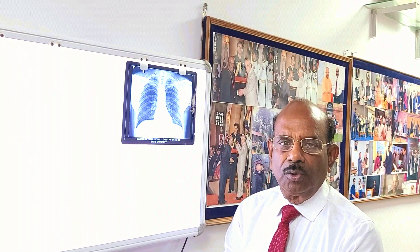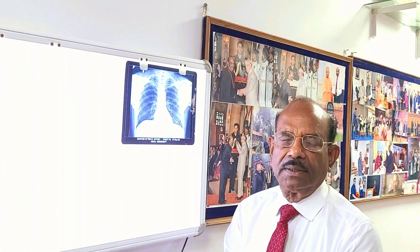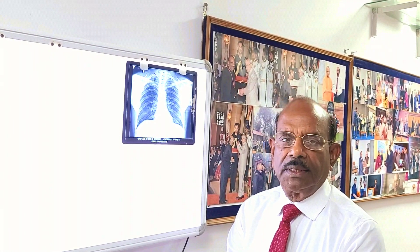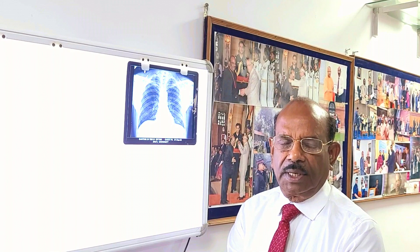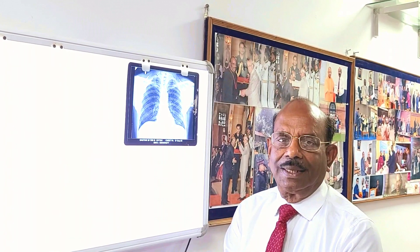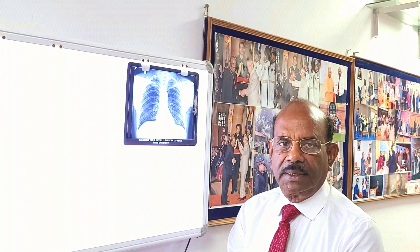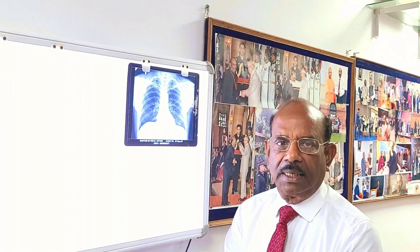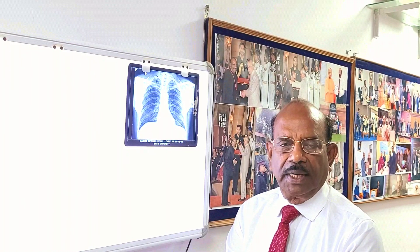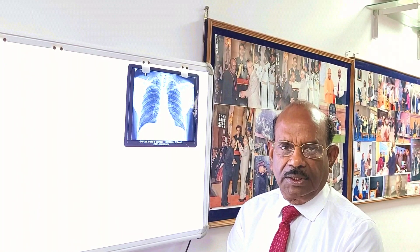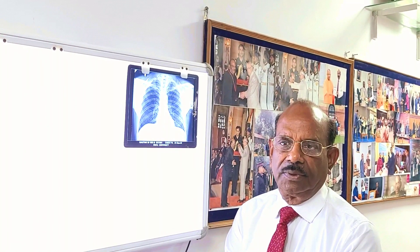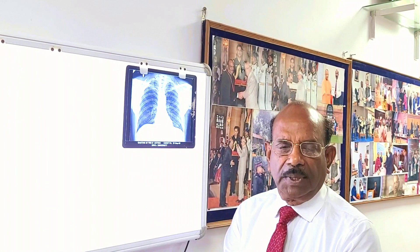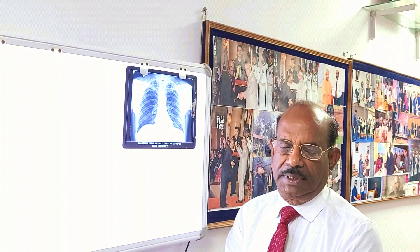To know the size of the heart, what you have to know is the maximum diameter of the thorax and the maximum diameter of the heart, to find out the cardiothoracic ratio. Normally it is less than 50%.